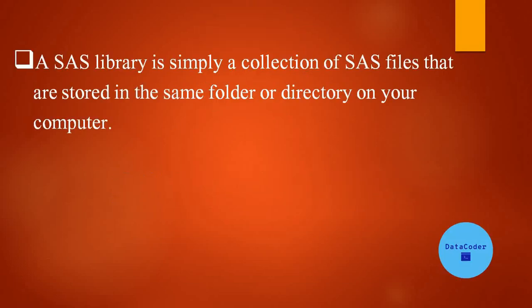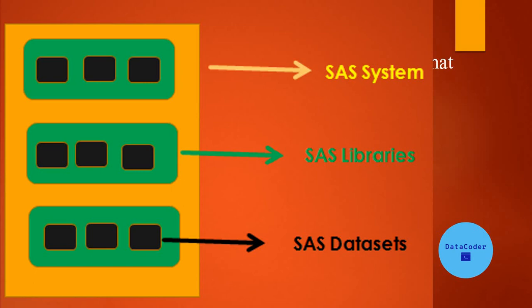A SAS library is simply a collection of SAS files that are stored in the same folder or directory on your computer. For example, if we have a cupboard and in that cupboard we have some cabinets, and in each cabinet we have some files — if the cupboard is considered as a SAS system, then each cabinet will be considered as a library, and each file inside the cabinets relates to a SAS dataset inside the libraries.